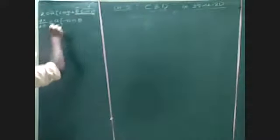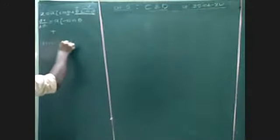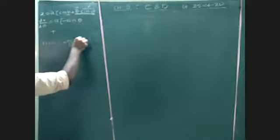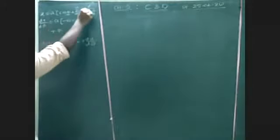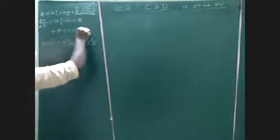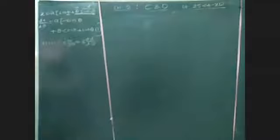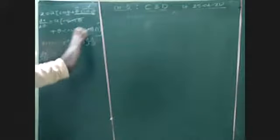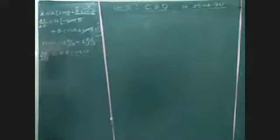This is u, this is v. d(uv) = u · dv/dθ + v · du/dθ. First, u is theta; the derivative of sin theta is cos theta. Plus v is sin theta, and derivative of theta with respect to theta is 1. Finally, the minus sign and plus sign cancel. The answer is dx/dθ = a · θ · cos θ.